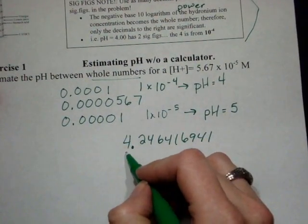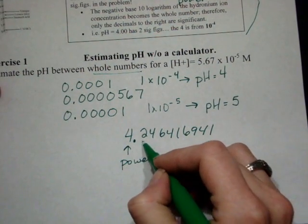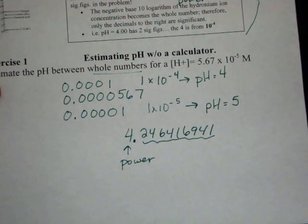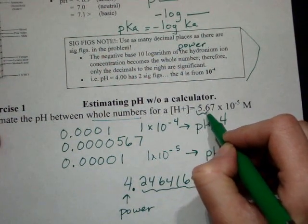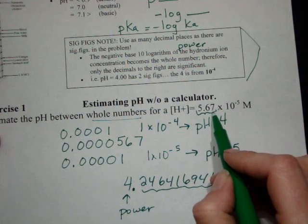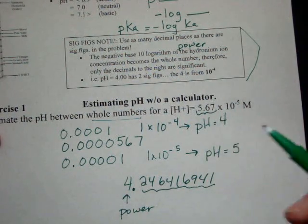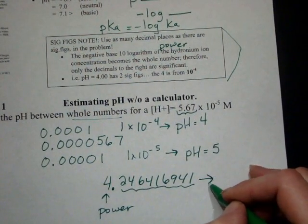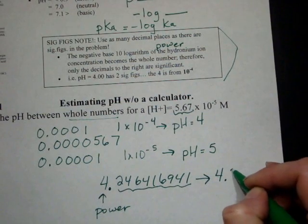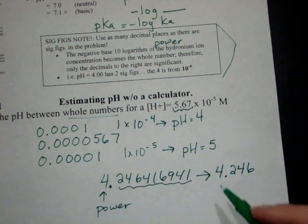So in this case, this 4 represents the power. The rest of these would represent precision. So in this particular case, we have three significant figures as the coefficient before the times 10 to the something. My answer should have three digits after the decimal place. So it should be 4.246 would be the pH that I would calculate.